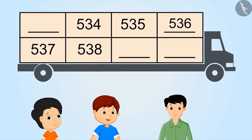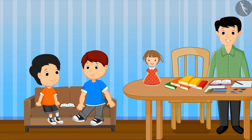Uncle, before 534 will come 534 minus 1. That is 533. And after 538, 539 will come. Yes, and then 540. Wow, you both have recognized the rule of this pattern so easily.